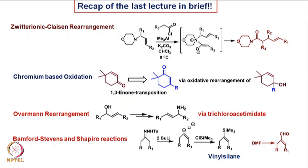Here the substrate was slightly different. For example, if we start with this allylamine and react it with this acid chloride in the presence of a Lewis acid, then the reaction proceeds through this enolate, and it leads to the formation of the corresponding product in which the R2 and R3 groups were anti-disposed.